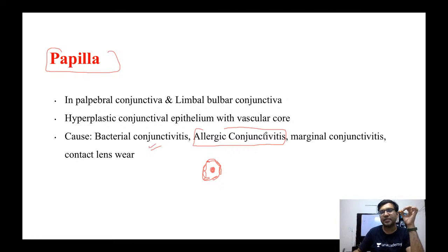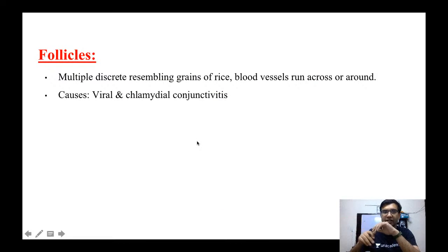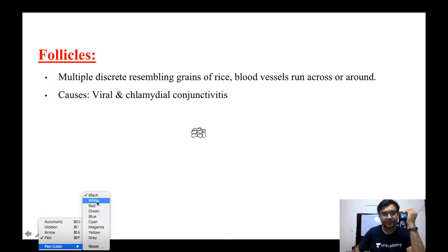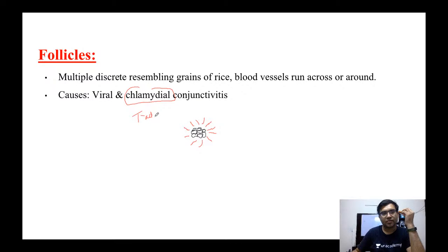What is the difference between papillae and follicles? Follicles look similar but are more whitish in character. They have a central core of epithelial cells with blood vessels around the periphery — the opposite of papillae. Follicles are more commonly seen in chlamydial conjunctivitis, which is called trachoma, as well as in viral conjunctivitis.